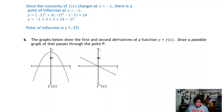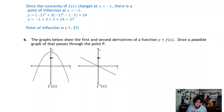Hey, welcome back everyone. We're going to be taking a look at the AP Calculus BC final, questions 6, 7, and 8, starting here with question 6. We've got functions below showing the first and second derivatives of y equals f of x, and we're supposed to draw a possible graph that passes through the point P.